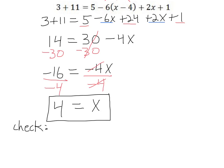Our initial equation, 3 plus 11, equals 5 minus 6 times minus 4. I'm going to plug in our 4 for the x. So previous we had x here.